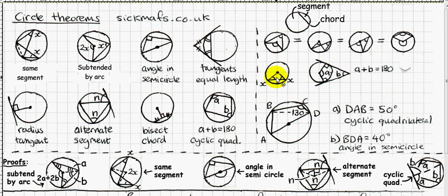This one is simple: if you have two radii, you get an isosceles triangle, so the two base angles must be equal to each other.